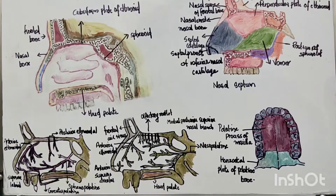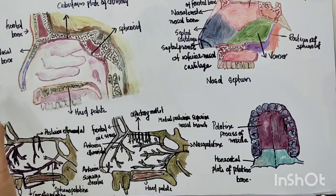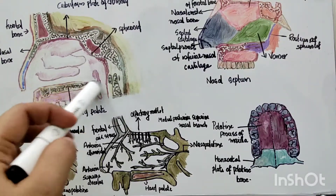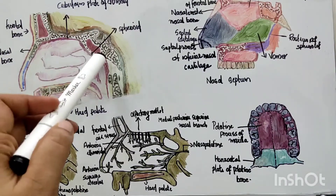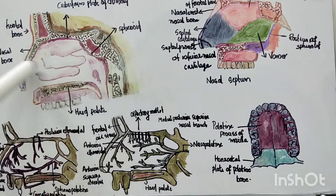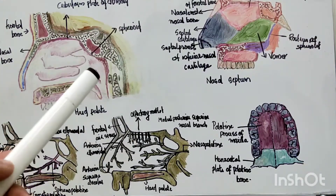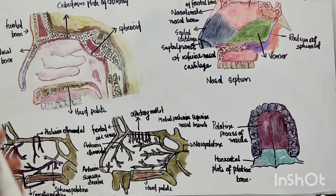Hello everyone. In this video we will discuss about the nasal cavity. The nasal cavity extends from the external nose to the posterior nasal aperture. It is about seven centimeters in length and the height of the cavity is about five centimeters.